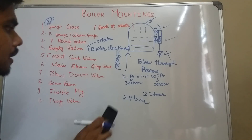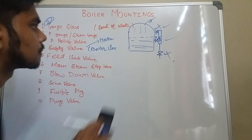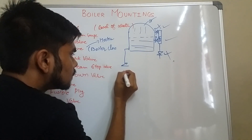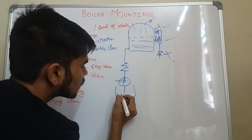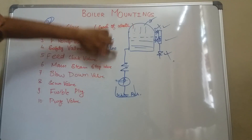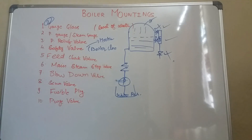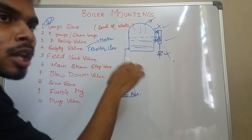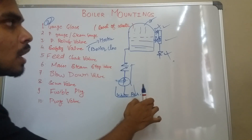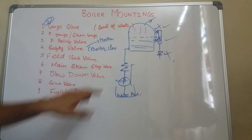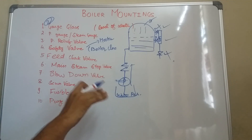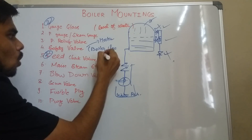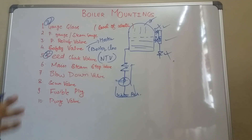The next one is your feed check valve, also called a non-return valve. Suppose you are filling up the boiler from a water reservoir using a pump — the feed check valve is a one-way valve that allows water into the boiler. When you stop the pump, since pressure inside the boiler is high and the reservoir pressure is low, there is a chance water flows back. So we use two non-return valves — if one fails, the other can act.